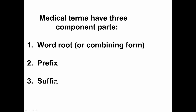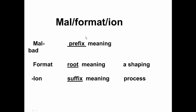When you break down a word to understand it, you usually begin with the meaning of the suffix. Here's an example: the word 'malformation.' The prefix 'mal-' means bad; 'format' is the root and means a shaping; and '-ion,' the suffix, means process. So malformation means a bad shaping process.